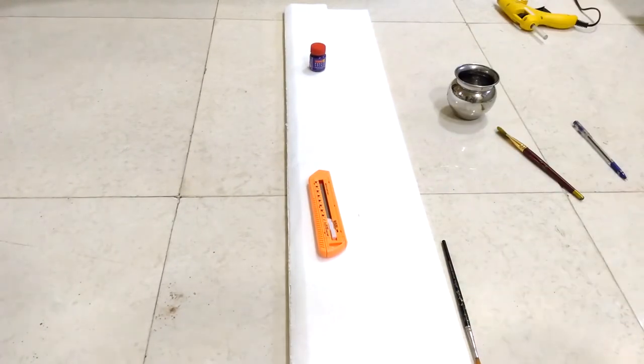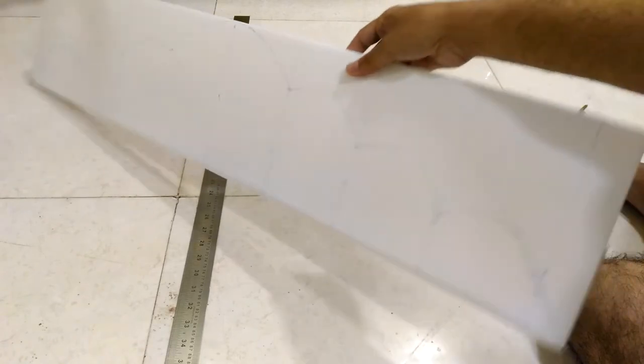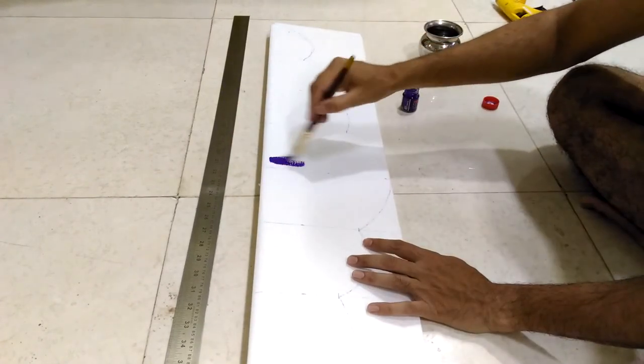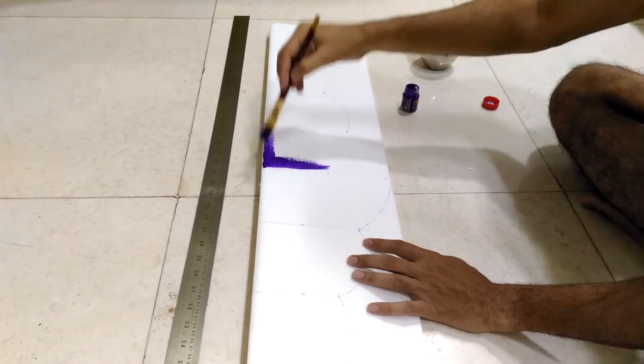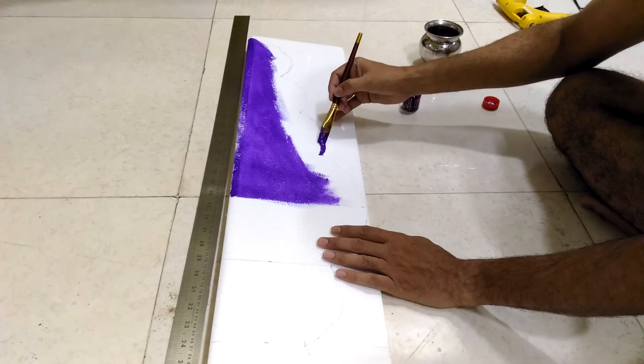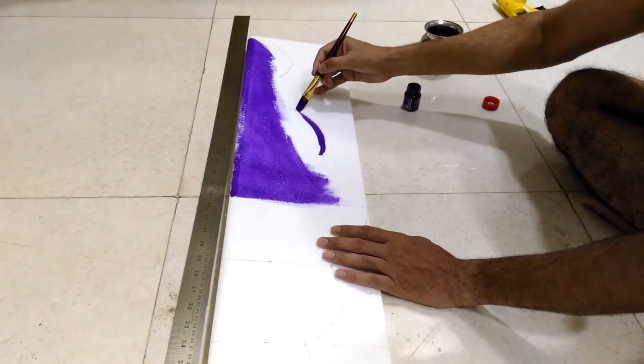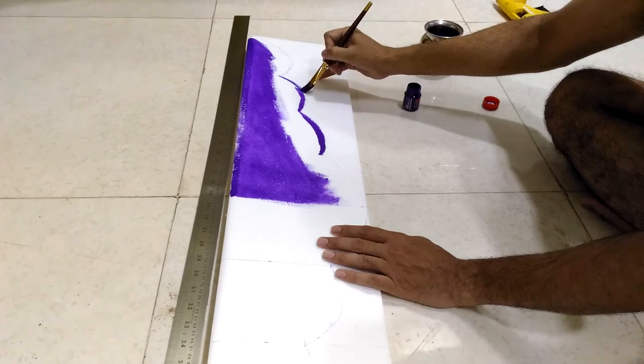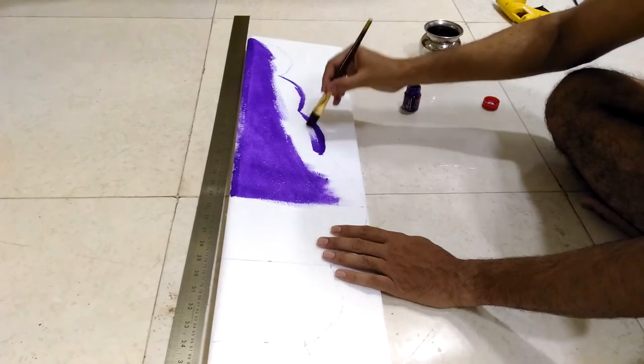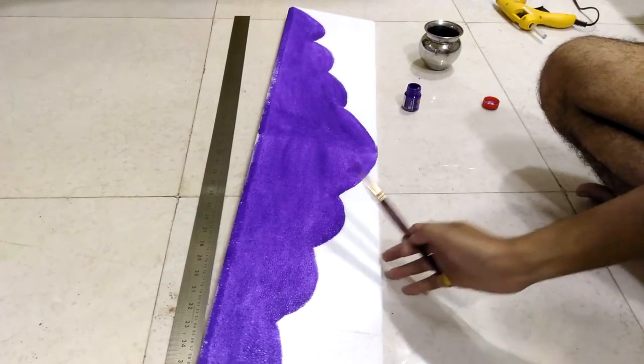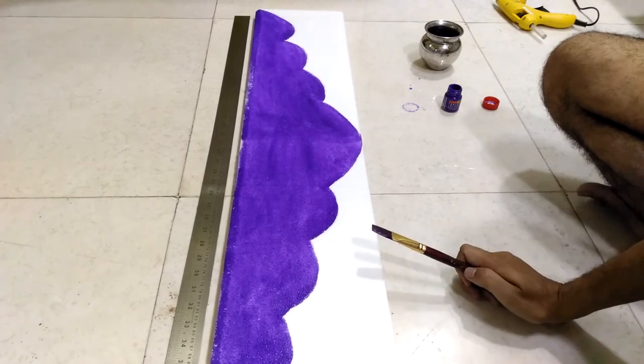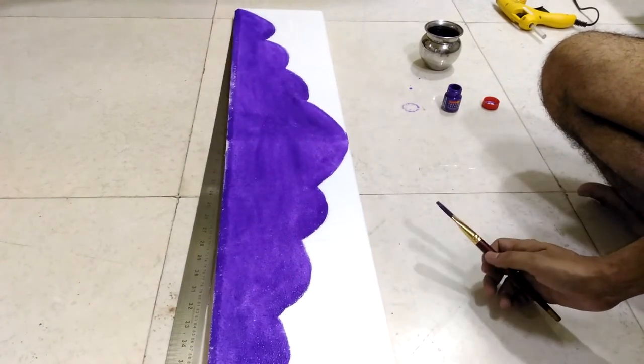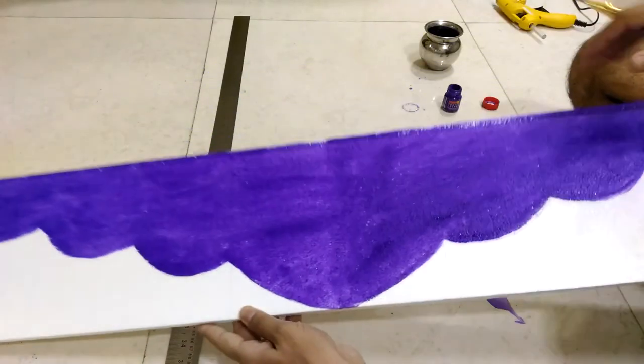Now it is time to paint the wing. So I have drawn one design roughly. These colors are easily available at the stationery shop so I am using the violet color as it is my favorite one. Let me know in the comments if you like this design. And I think that's enough, it's looking very good.